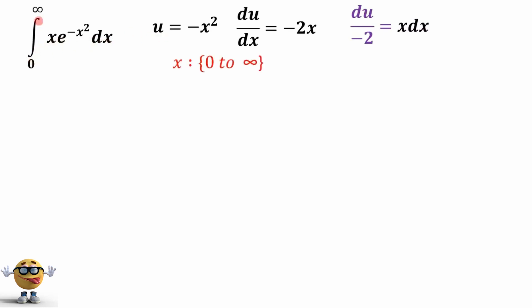And x goes from 0 to infinity. That means when x is 0, u is 0. And when x is infinity, or as x approaches infinity, u approaches negative infinity. So we'll change the limits of integration and do our substitution for x dx into here.